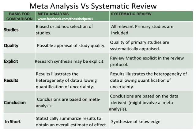In meta-analysis, results illustrate the heterogeneity of data allowing quantification of uncertainty. Whereas in systematic review, results also illustrate the heterogeneity of data allowing quantification of uncertainty. In meta-analysis, conclusions are based on meta-analysis. Whereas in systematic review, conclusions are based on the data derived, and might involve a meta-analysis.